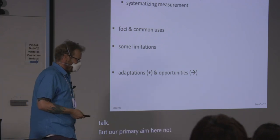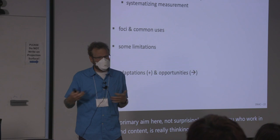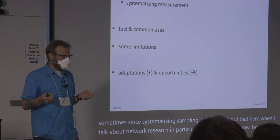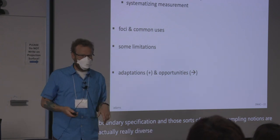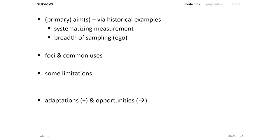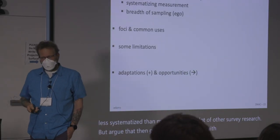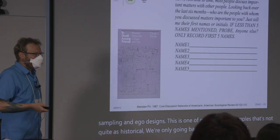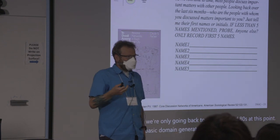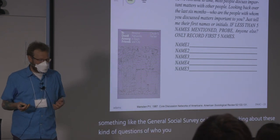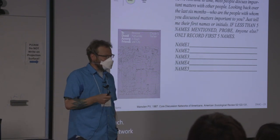A primary aim in survey research is systematizing measurement and sometimes sampling. I don't often put sampling here in the network context because our sampling notions are actually really diverse depending on the approaches taken — less systematized than for most other survey research. The primary aims within surveys really differ between egocentric and complete network research. Classic name generator questions available in something like the General Social Survey or Claude Fisher's work — thinking about who you talk to about important matters — is a classic ego network approach. It's been criticized, but I also think there's a lot of value in questions like this.